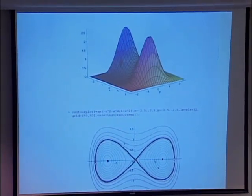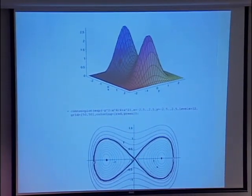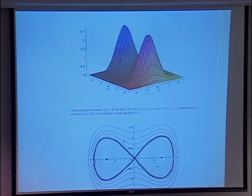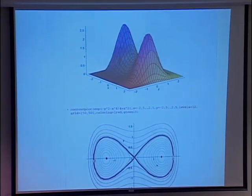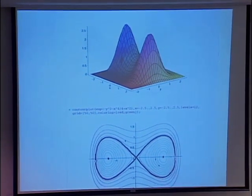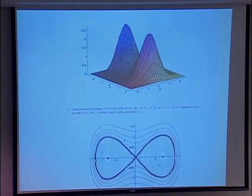You can see quite easily where the critical points are just by looking either at the graph or at the contour plot. The only thing with the contour plot is you need to read the values to tell a minimum from a maximum, because the contour plots look the same — in one case the values increase and in the other they decrease.